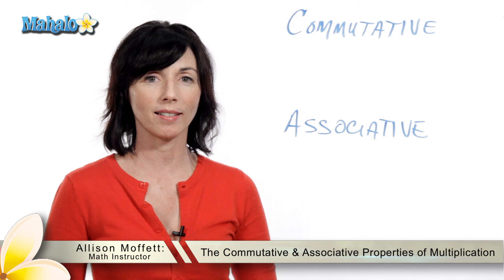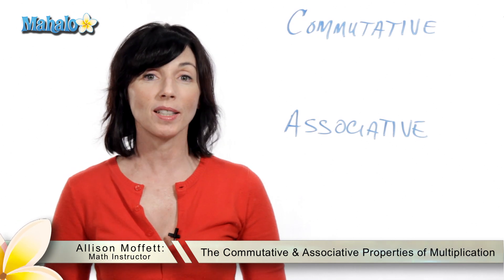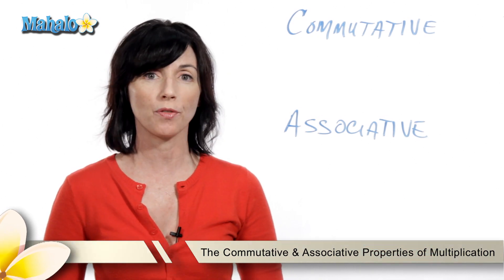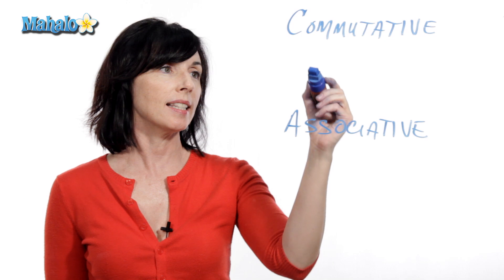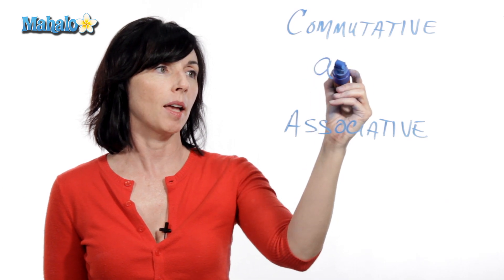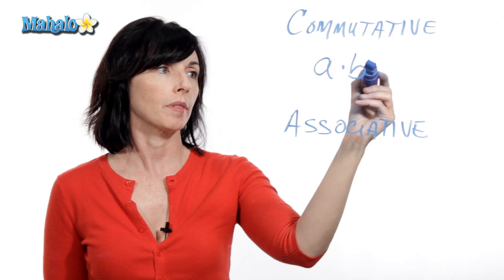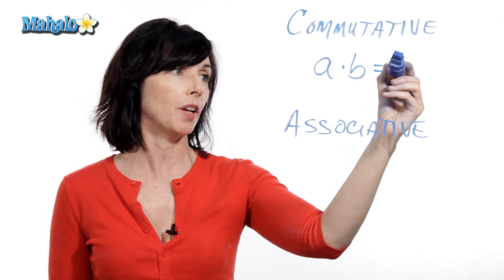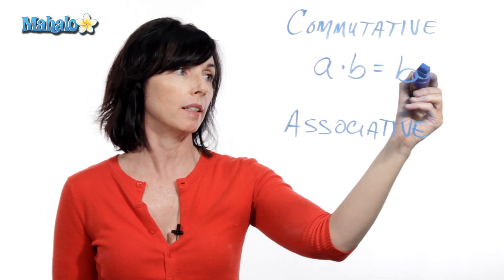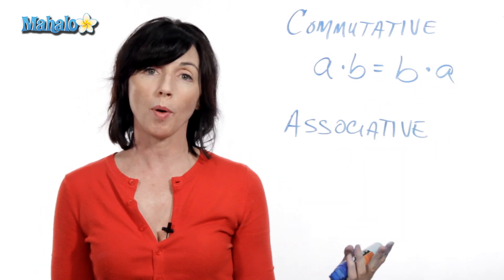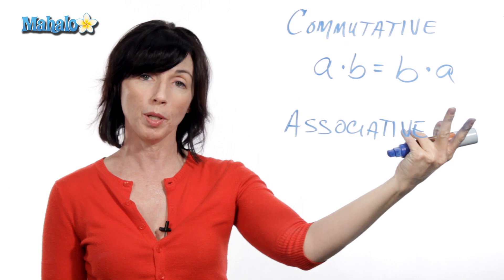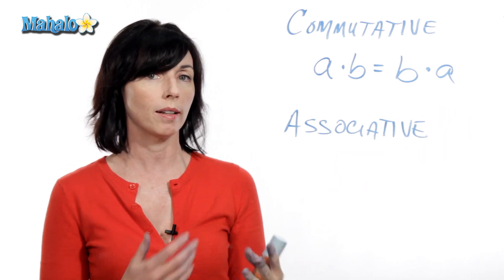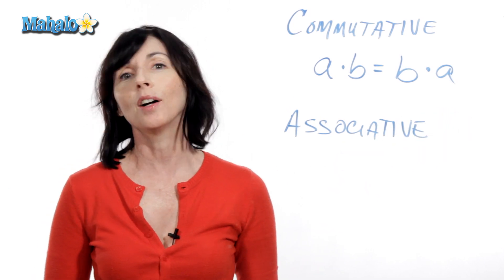Hey, it's Alison from mahalo.com. I want to talk to you about the commutative and associative properties for multiplication. So let's say we have A times B. The commutative property for multiplication says I'll get the same answer if I do B times A. So the property says that these numbers commute — I can change the order in which I multiply them and I'll still get the same answer.